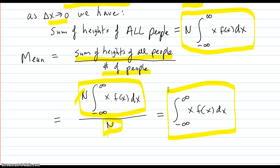And that's your formula for the average of a distribution. The mean of a distribution given the density function f of x is just integral from negative infinity to infinity of x f of x dx.